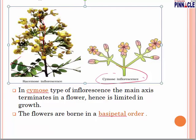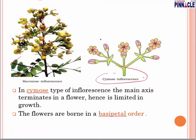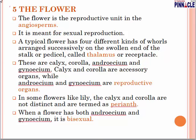In cymose type of inflorescence, the main axis terminates in a flower, hence growth is limited. The flowers are borne in a basipetal order instead of acropetal succession.